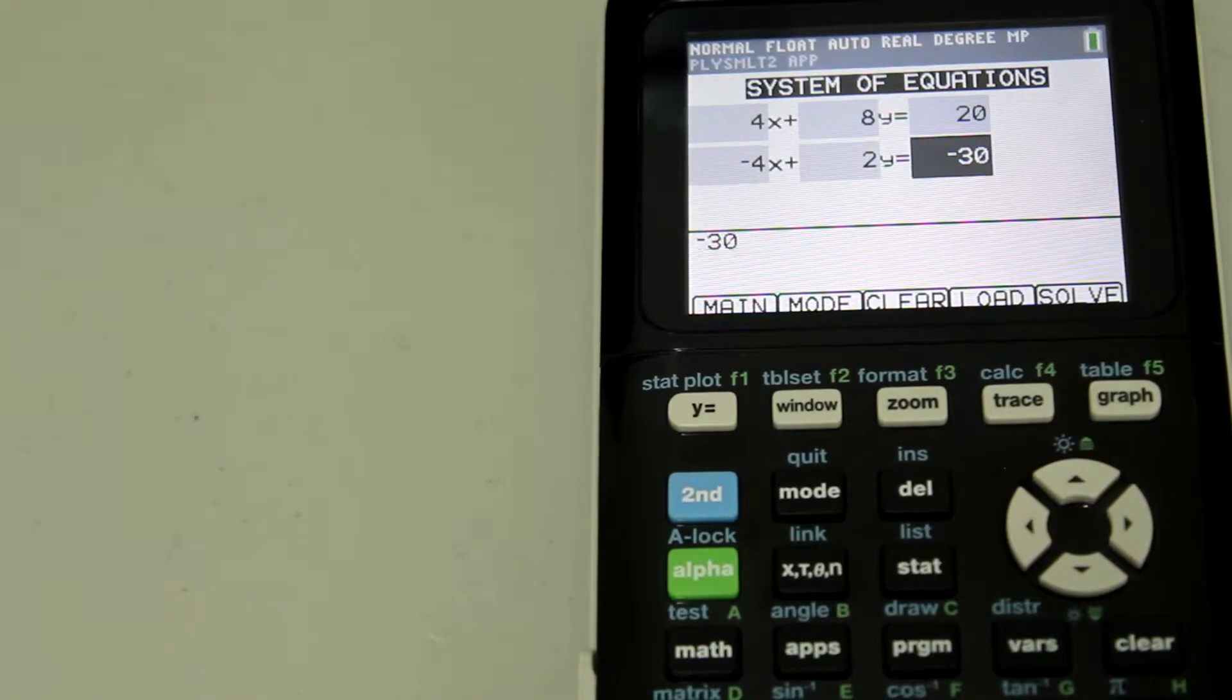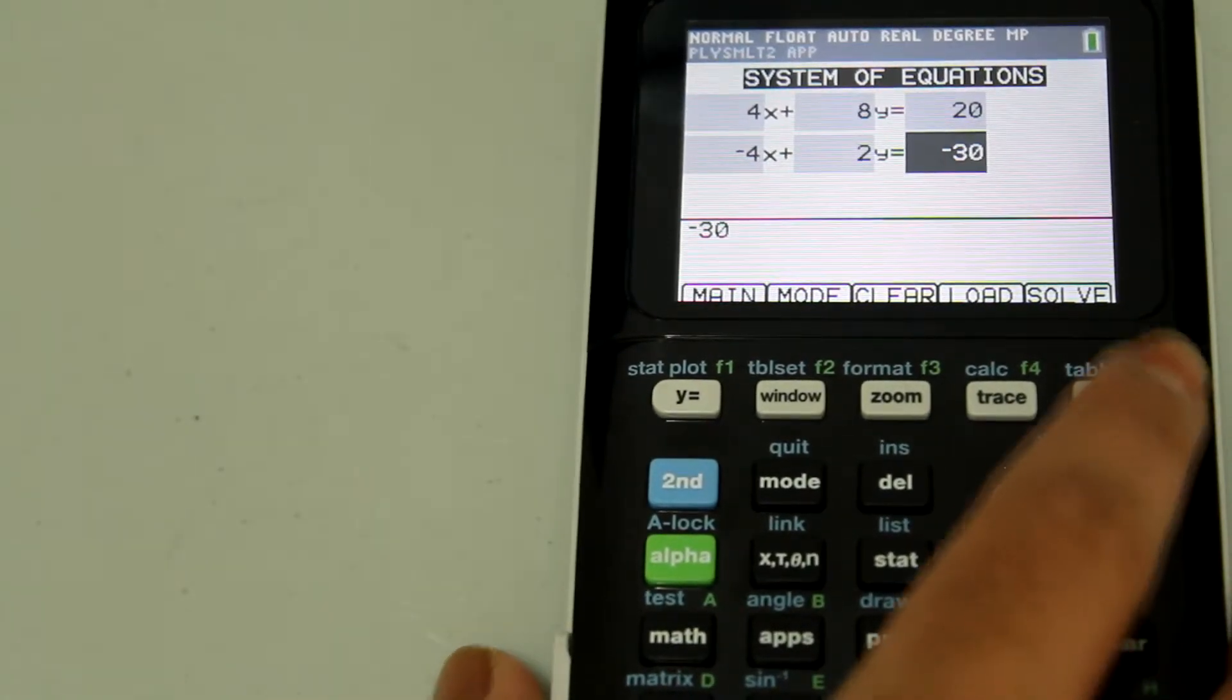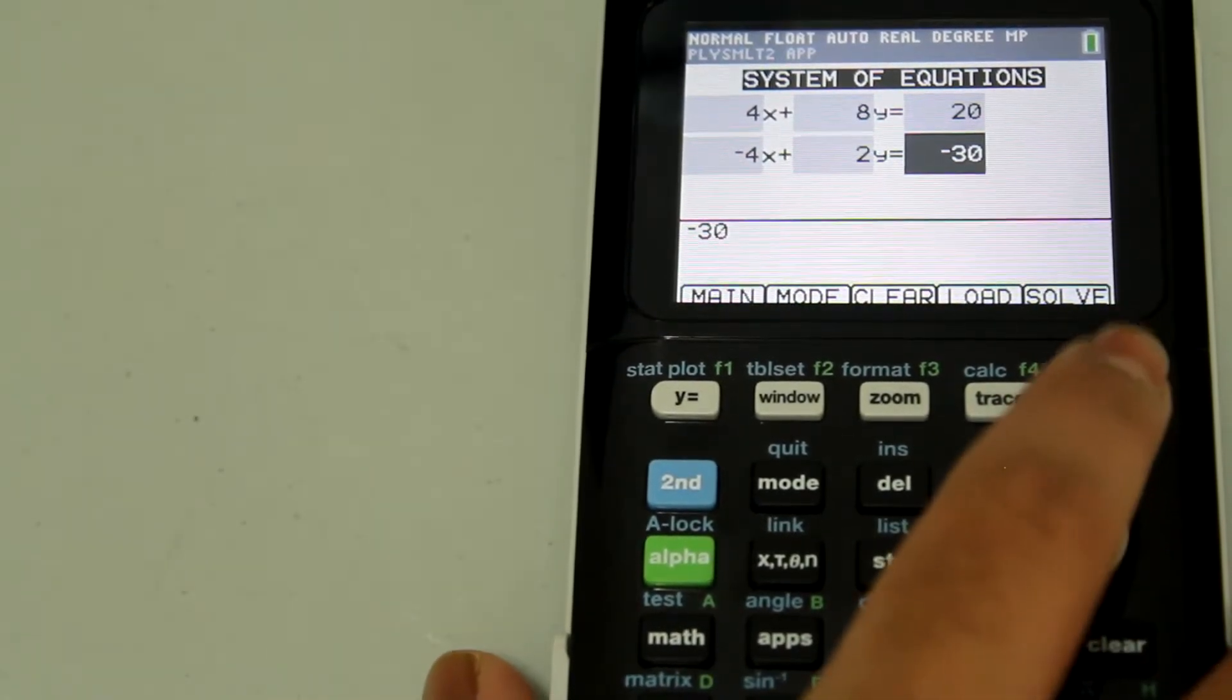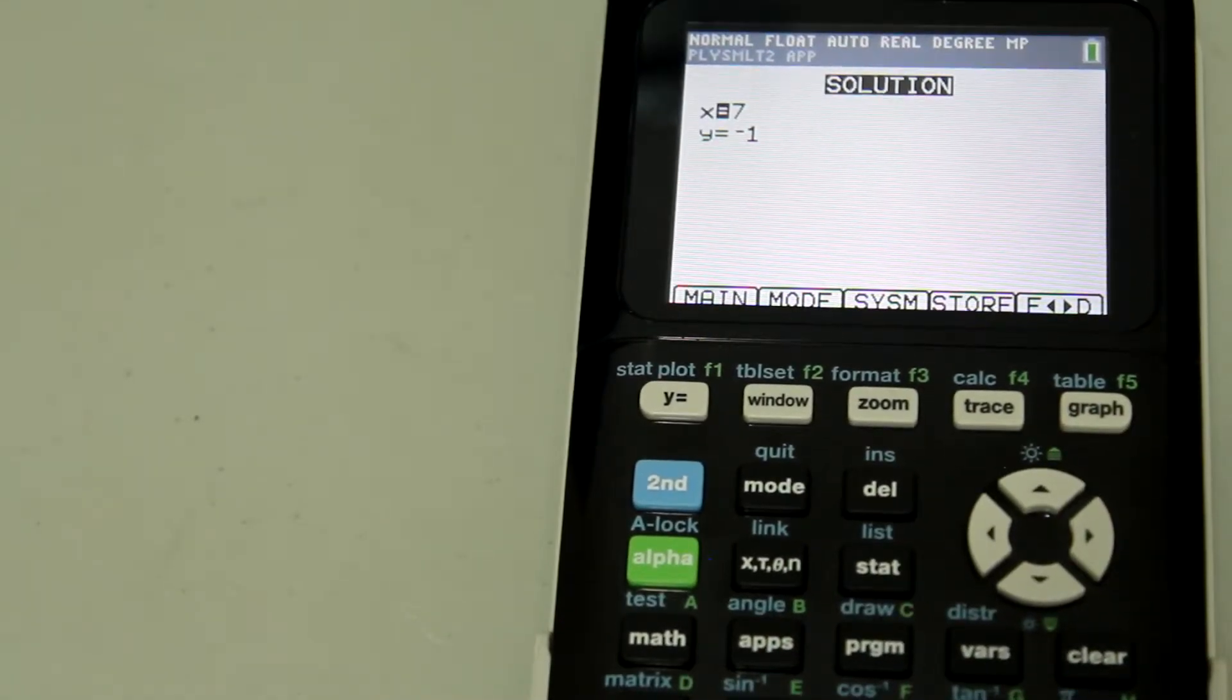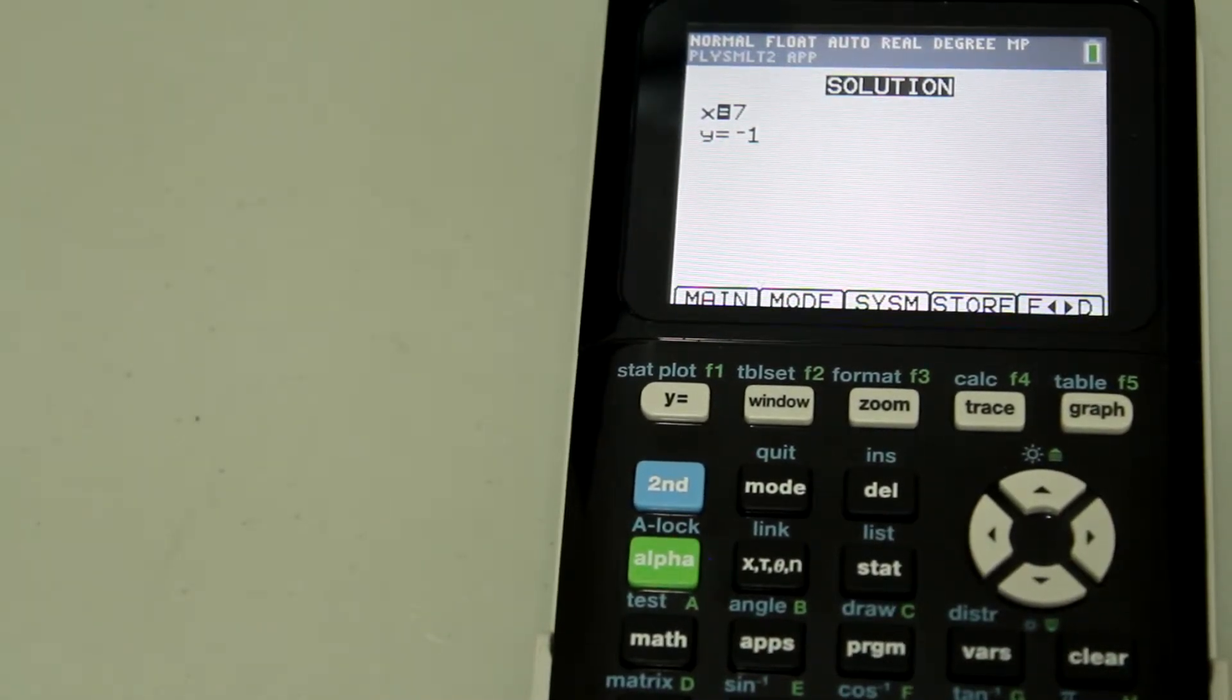And once you have that entered, just hit the graph button right under solve. And it gives us the answer, x equals 7, y equals negative 1.